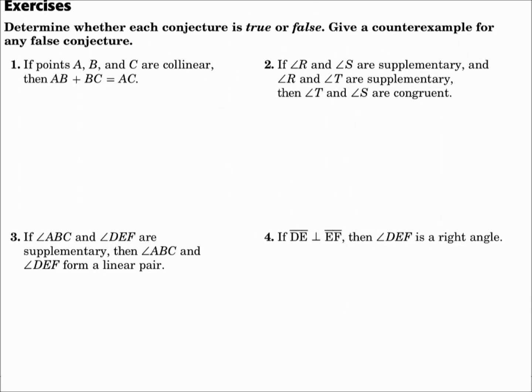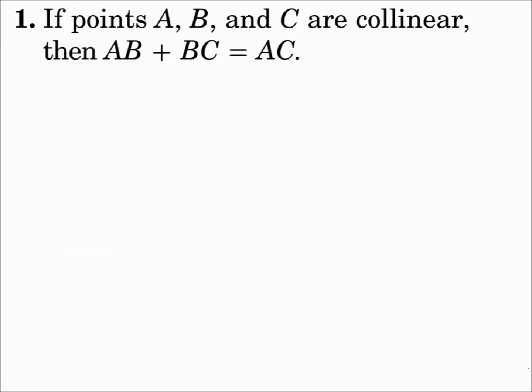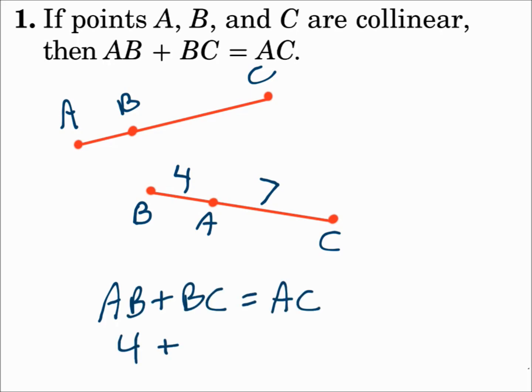Determine whether each conjecture is true or false. Give a counterexample for any false conjecture. Number 1: If points A, B, and C are collinear, then AB plus BC equals AC. Well, that's certainly possible if B is in the middle. The parts add up to equal the whole thing. But nothing says that B has to be in the middle. What if A was in the middle? If I gave some segment measures and said AB is 4, AC is 7, and that means BC has to be 11. Does it work now? Does 4 plus 11 equal 7? No, it does not. So there's our counterexample. This conjecture is false.